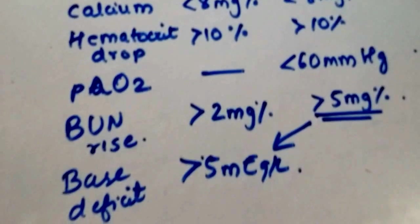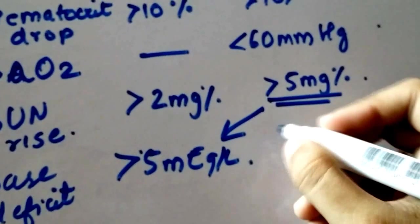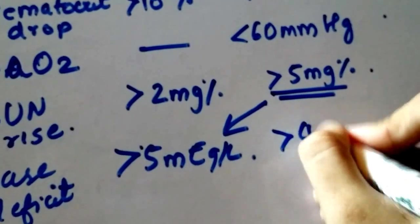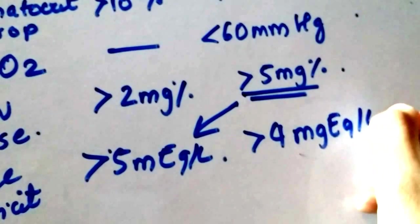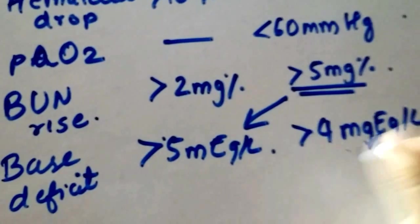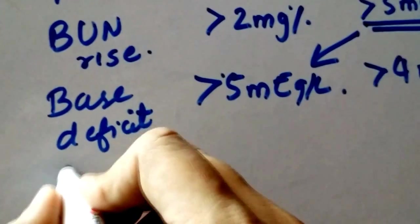So base deficit, if it's greater than 5 milliequivalents per liter, it is bad, and it's in the non-gallstone pancreatitis. And out here the base deficit is 4 milliequivalents per liter.